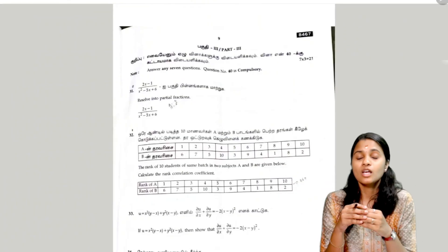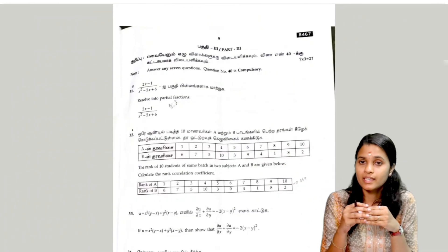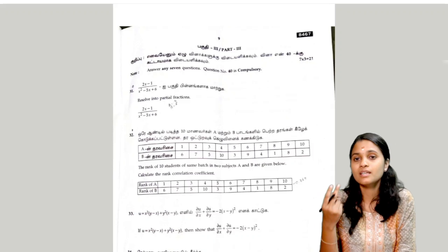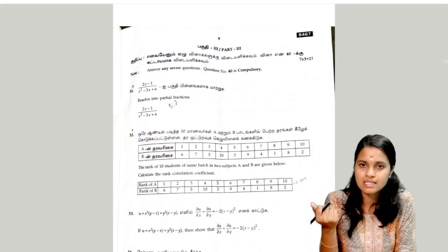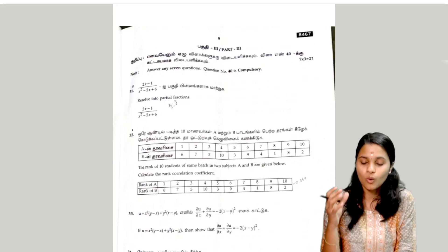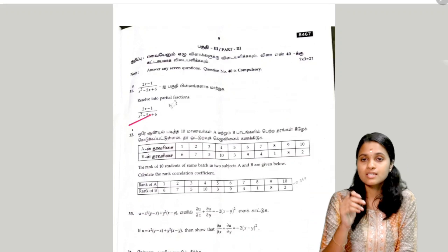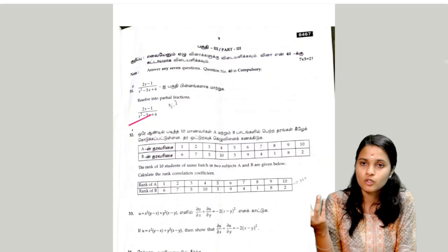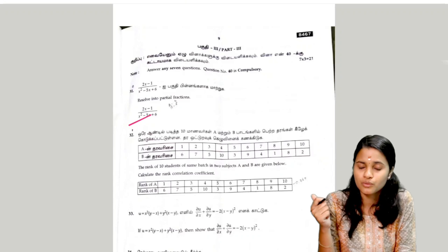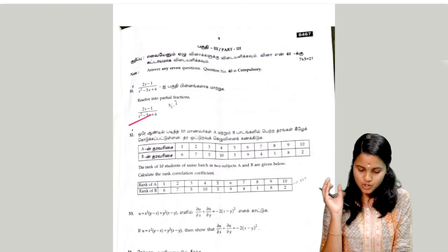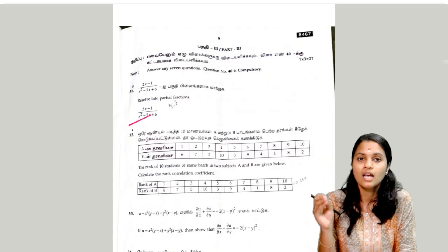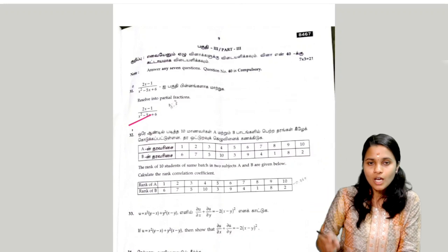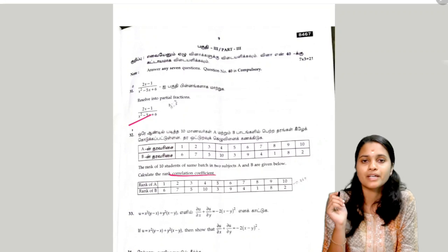The next question is question 31 — an important topic. In this chapter we will find what important topics have already been discussed. Resolve into partial fractions: find the A and B terms, change the values, and finally get the answer. Next: find the correlation coefficient for the rank of 10 students — find A and B values.